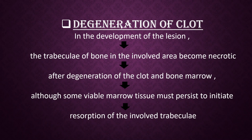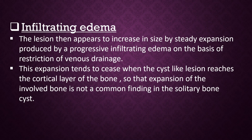In the development of the lesion, the trabeculae of bone in the involved area become necrotic after degeneration of the clot and bone marrow, although some viable marrow tissue must persist to initiate resorption of the involved trabeculae. The lesion then increases in size by steady expansion produced by a progressive infiltrating edema on the basis of restriction of venous drainage. This expansion tends to cease when the cyst-like lesion reaches the cortical layer of bone, so that expansion of the involved bone is not a common finding.